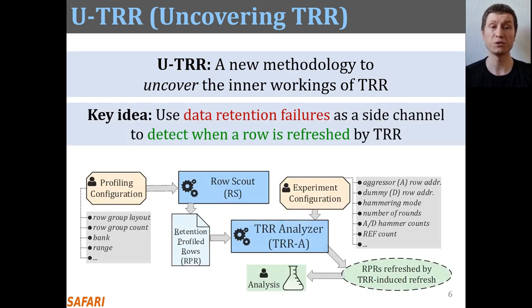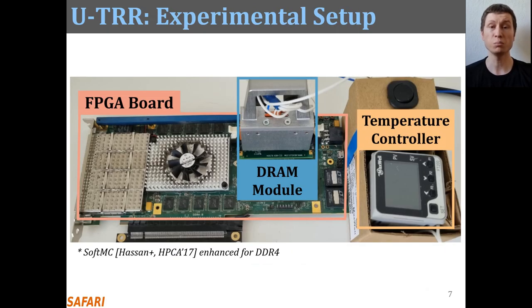The key idea of UTRR is to use data retention failures in DRAM as a side channel to detect when a certain row is refreshed by TRR. We implement UTRR using SoftMC, an FPGA-based infrastructure which we enhance for DDR4 and equip with precise temperature control.